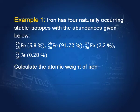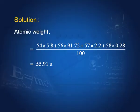For example, iron has four naturally occurring stable isotopes. Iron-54 has an abundance of 5.8%, iron-56 has 91.72%, iron-57 has 2.2%, and iron-58 has 0.28%. You can find the atomic weight as: (54 × 5.8 + 56 × 91.72 + 57 × 2.2 + 58 × 0.28) divided by 100. The atomic weight of the iron nucleus is therefore 55.91 u.